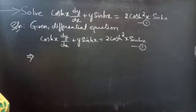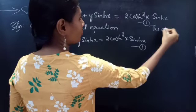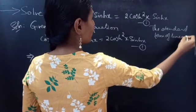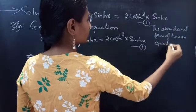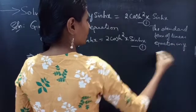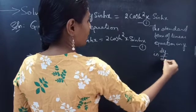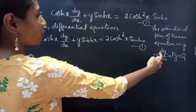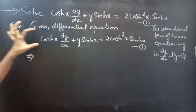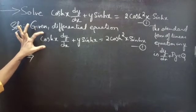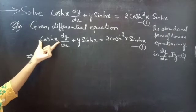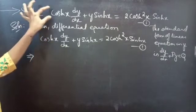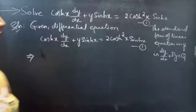We know that the standard form of linear equation in y is dy by dx plus P into y equals to Q. If you notice, the coefficient of dy by dx is 1, so we can divide the whole equation by the coefficient of dy by dx to make the coefficient of dy by dx equal to 1. Then the given equation will be reduced to the standard form of linear equation in y.